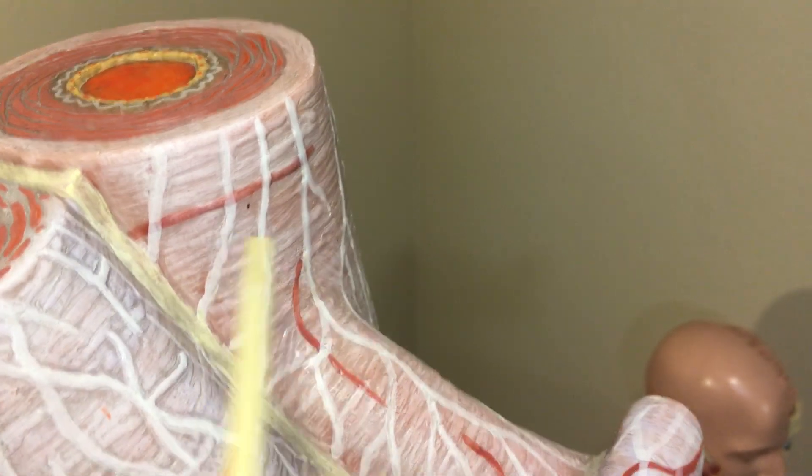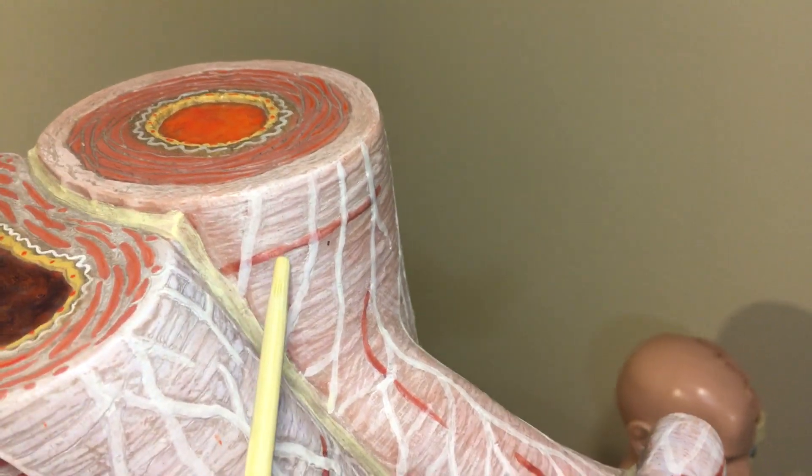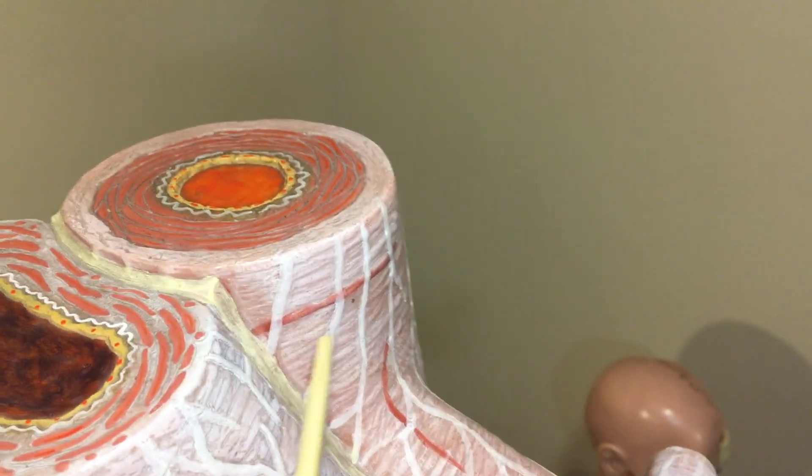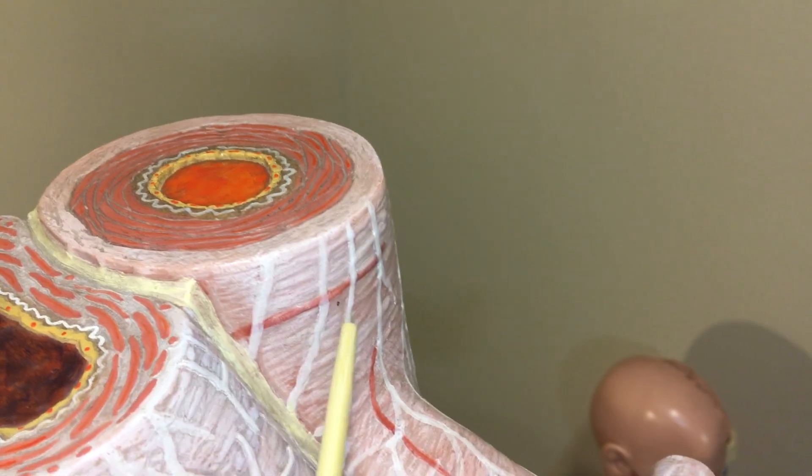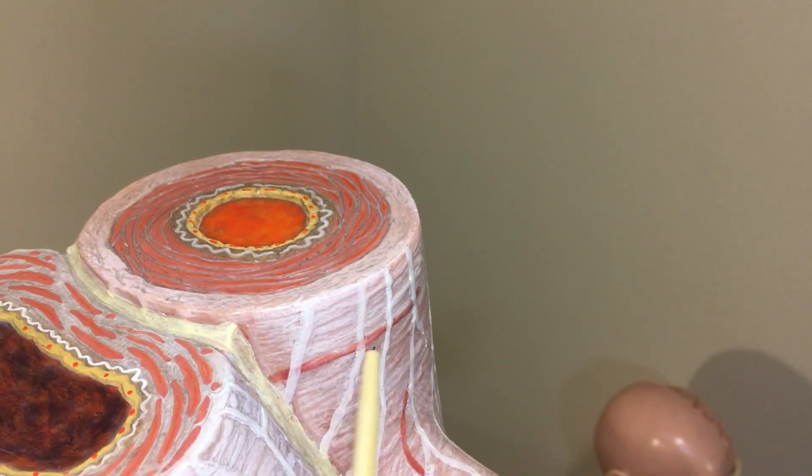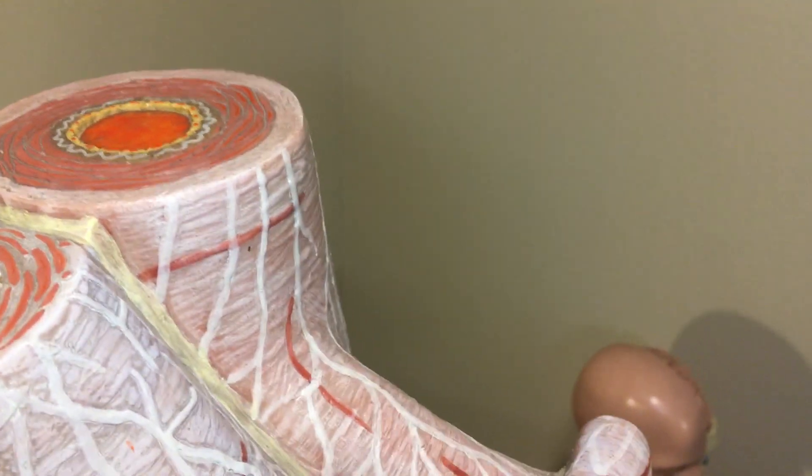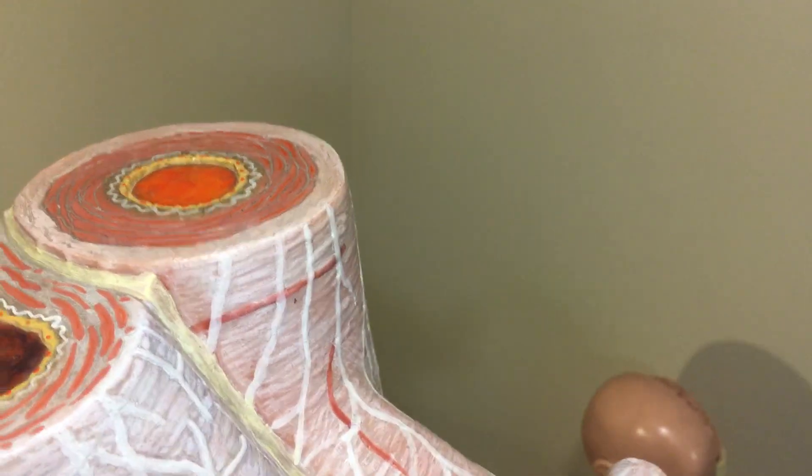And you can see how it's not a perfect layer. Like there is a little bit of blending from the tunica media to the tunica externa as you're seeing some of the smooth muscle kind of pop out. And that's what it's trying to show. It's not a perfect transition.